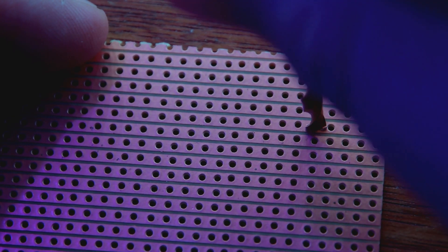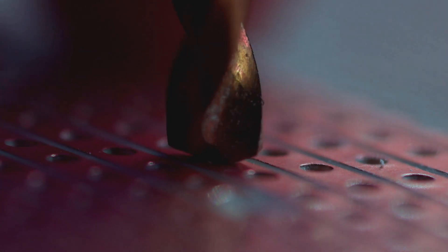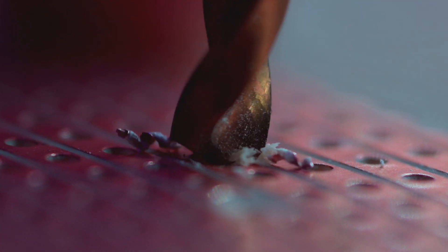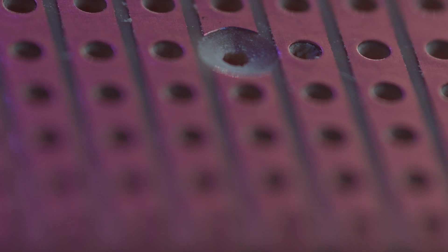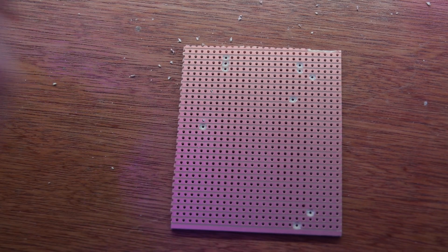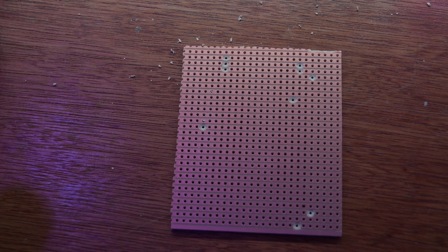So the first step, as always, is break the traces. I'm just going to use a drill bit with a couple of twists and that does it quite nicely. Then I'm going to add some jumper wires, and these short ones are just legs that I've cut off from previous projects such as LEDs and resistors.